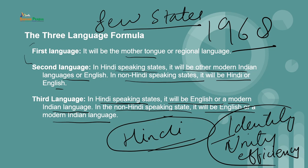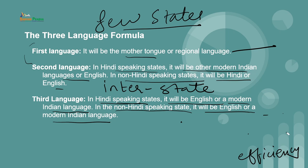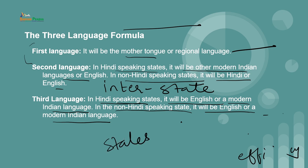Since education is a state subject, the implementation of the formula lay with the states, and only a few states had adopted the formula in principle. In many Hindi-speaking states, Sanskrit became the third language instead of any modern Indian language, preferably a South Indian language. But this defeated the purpose of the three-language formula to promote interstate connections. In non-Hindi speaking states such as Tamil Nadu, a two-language formula was adopted and the three-language formula was not implemented.